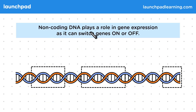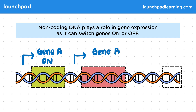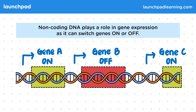Non-coding DNA plays a role in gene expression as it can switch genes on or off. This section of DNA before the coding section can determine whether gene A turns on or off. In this case it's turned on, but this section has turned gene B off, and the same again happens for gene C.